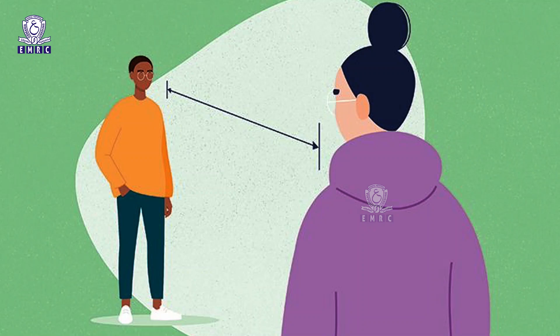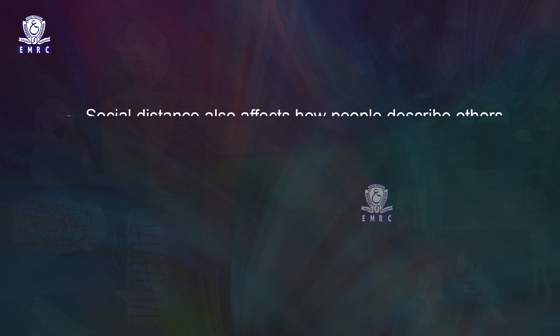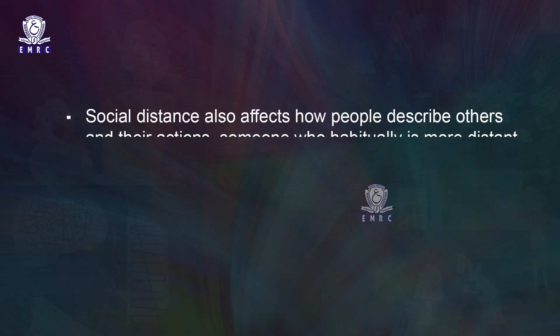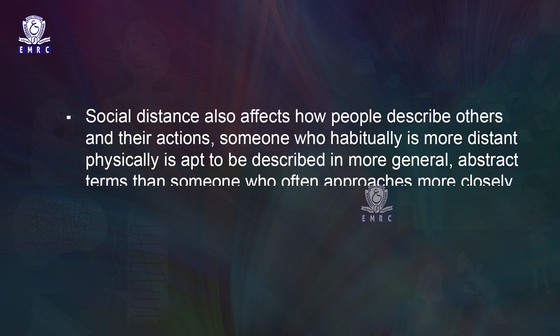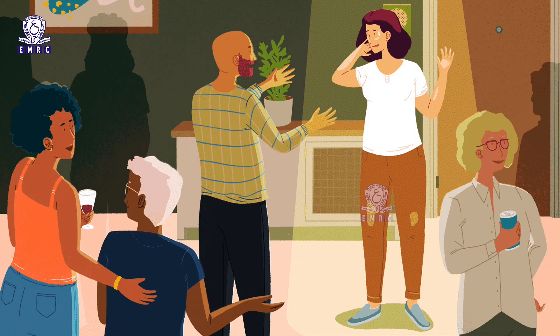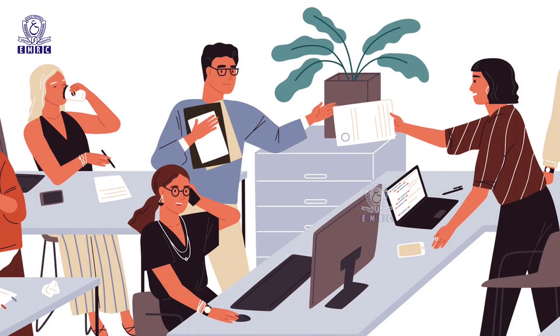Social distance. When two people interact, the physical space or distance between them — their social distance — often indicates something about how intimate or personal their relationship is. Social distance also affects how people describe others and their actions. Someone who is habitually more distant physically tends to be described in more general, abstract terms. Just as with eye contact and wait time, individuals differ in the distance they prefer for different levels of intimacy, and complications happen if two people expect different distances for the same kind of relationship.